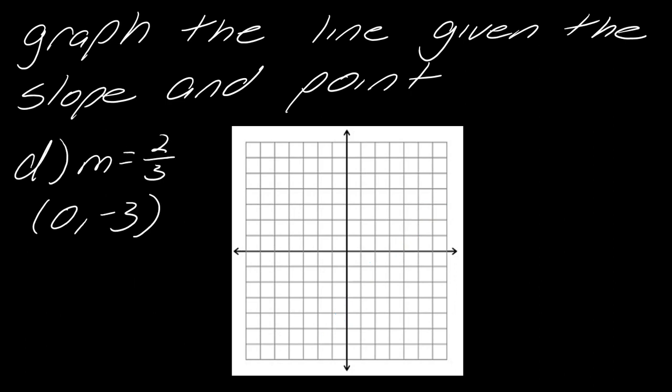Let's do one more. M equals two thirds, starting at the point zero, negative three. I start at the origin and go down three to mark my point. Then my slope is two over three, so I go up two and over three — I do that twice to get two more points, then connect them. You can tell I'm getting close to dinner time — my brain is going!